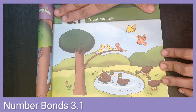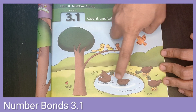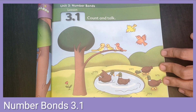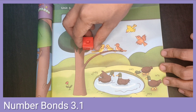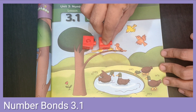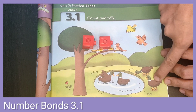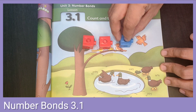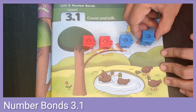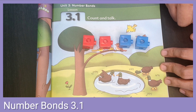How many ducks do you see in this picture? How many ducks are in the water? One, two. Let's put two blocks to represent those ducks in the water. How many ducks are out of the water? One, two. Let's put another two blocks to represent those ducks out of the water.